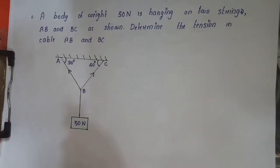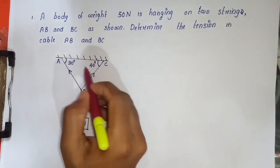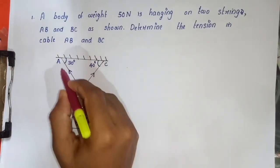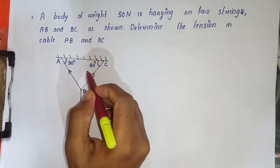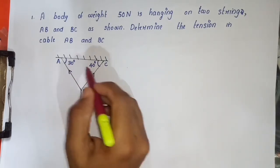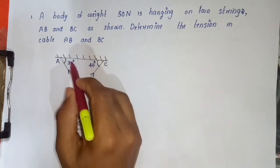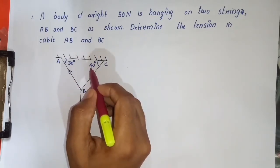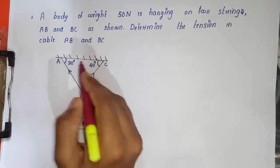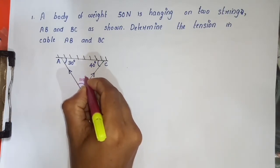Looking at the angles, this angle is 30 degrees. This forms a triangle. The sum of the interior angles is 180 degrees. We have 30 degrees and 40 degrees, so 30 plus 40 is 70. Then 180 minus 70 is 110 degrees.